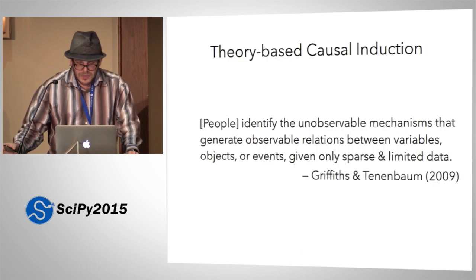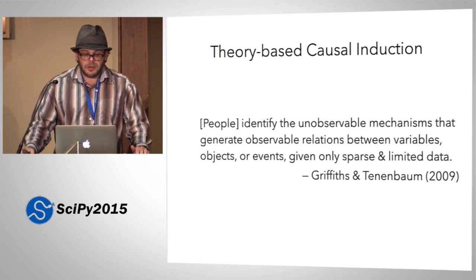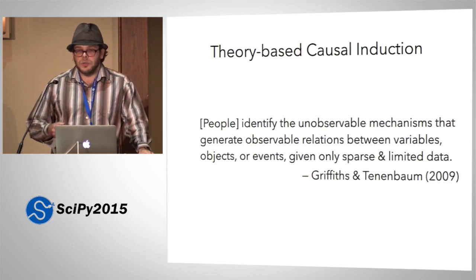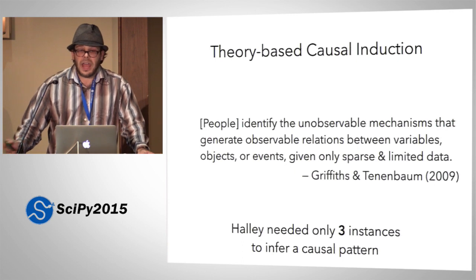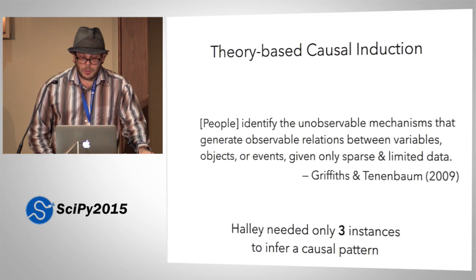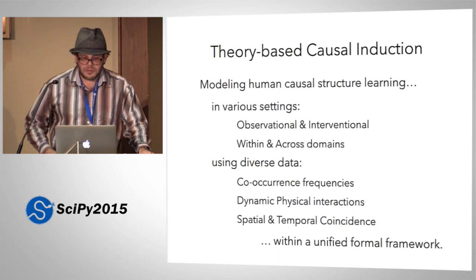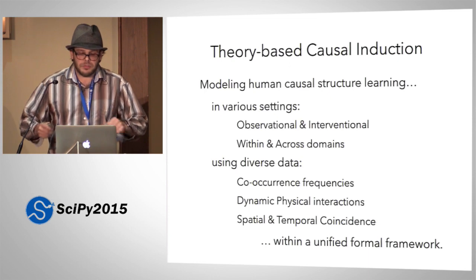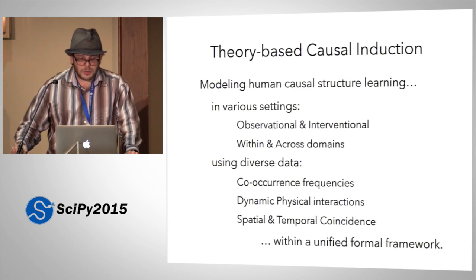So what am I talking about this for? People are amazingly able to identify the unobservable mechanisms that generate observable relations between variables, objects, and events, given only sparse and limited data. Keep in mind, Halley needed three instances to infer the causal pattern and trajectory, to infer that this was the same comet and that it was going to show up again — and he was mostly right. One framework for describing how we make these sorts of inferences is the theory-based causal induction framework by Griffiths and Tenenbaum.